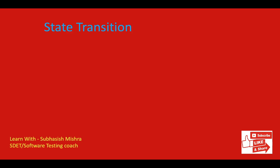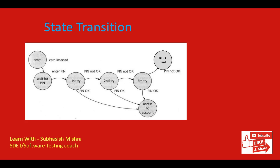The next technique is state transition testing. State transition testing is used when a system has different states and transitions from one state to another are determined by the rules of the machine. Any system where you get a different output for the same input depending on what happened before is a finite state system. For example, consider an ATM machine. There are seven states but only four possible events: card inserted, enter PIN, PIN OK, and PIN not OK.